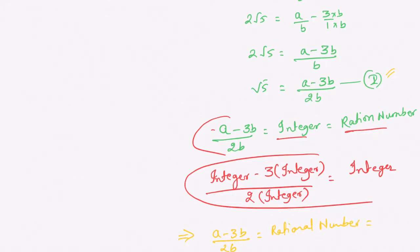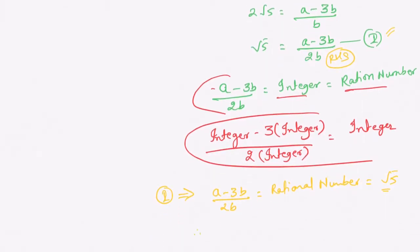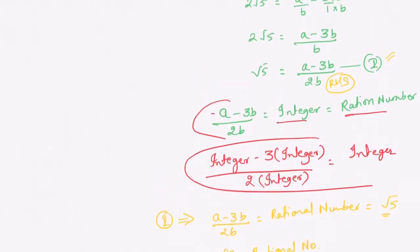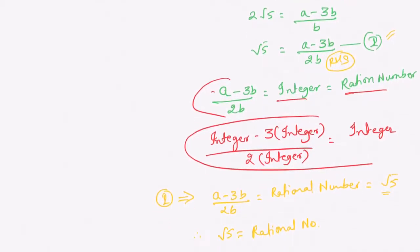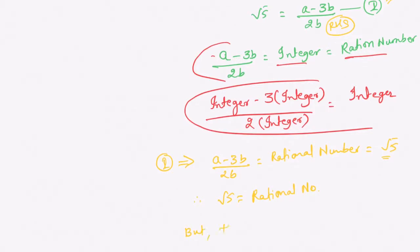Hence, if the right-hand side in statement 1 is a rational number, then root 5 is also a rational number. Therefore root 5 equals a rational number. But this contradicts the fact that root 5 is an irrational number.